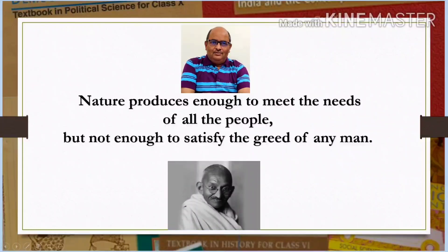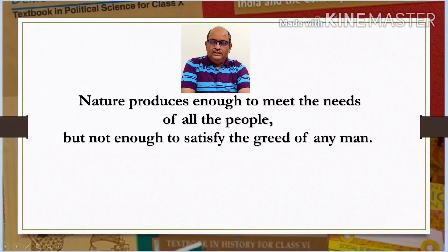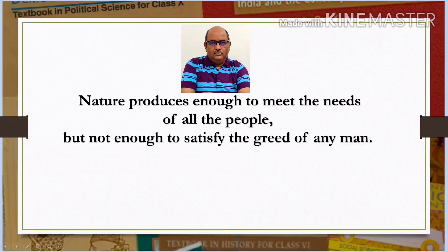Gandhiji talked of the containment of wants. His idea of limitation of wants was contrary to classical and contemporary theories of economics, which focused on expanding the good space and satisfying unlimited human wants. He suggested two measures: first, that everyone should get sufficient work to make ends meet, and second, that the means of production of necessities should be under the control of the masses.